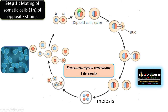Let's begin. In the case of baker's yeast or Saccharomyces cerevisiae, there are two mating types, designated as A and alpha. As you see, these two mating types are haploid. Somatic cells of opposite strains come in contact under the influence of pheromones or chemical signals and fuse to form the diploid cell.